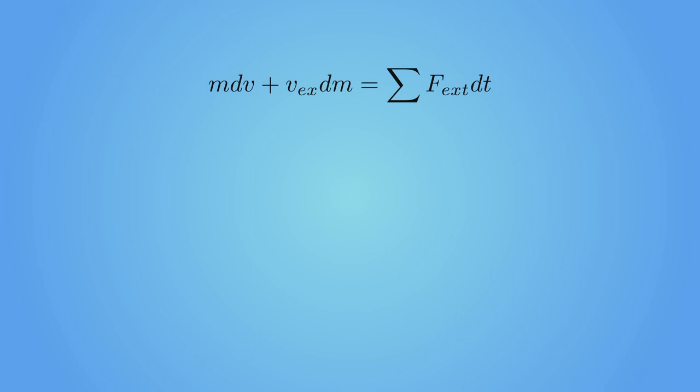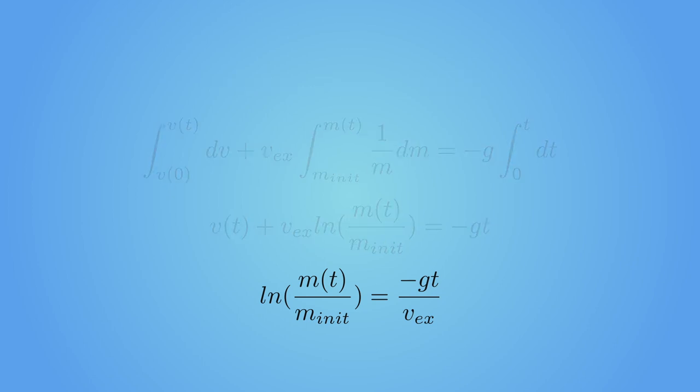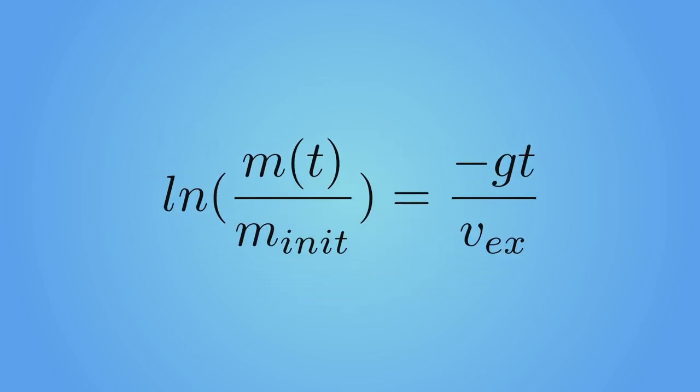There is only a single external force acting on the rocket: its weight. So let's replace that part of the equation. We take this equation and integrate it between time equals zero and time equals t. Remember that the speed of the rocket is zero since it's hovering, and we get this.